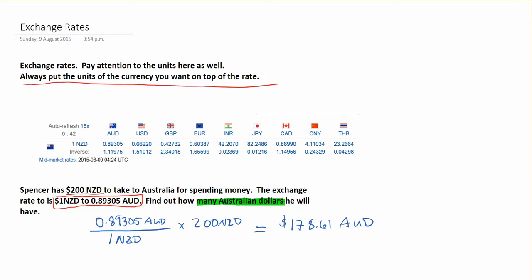With exchange rates, you can always write them as fractions. The currency you want in your answer goes on top, the one you don't want goes on the bottom, and then you multiply by the amount you have.